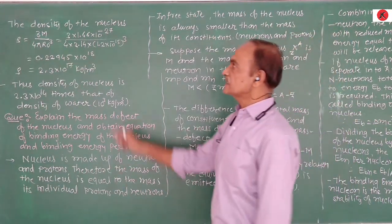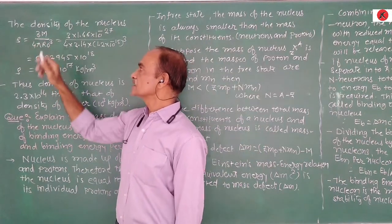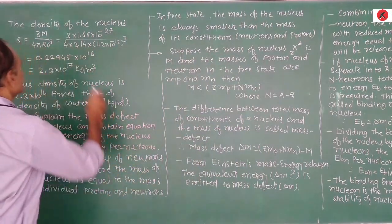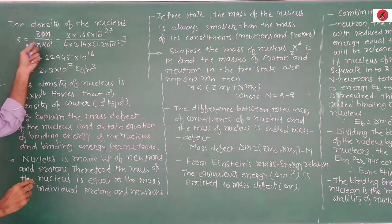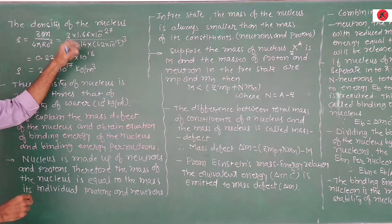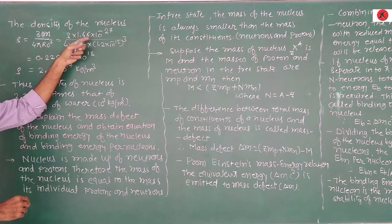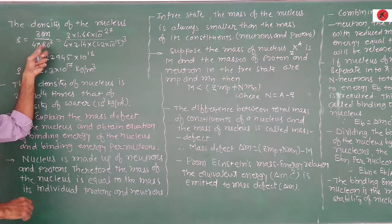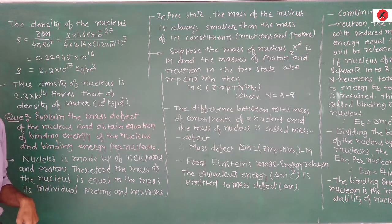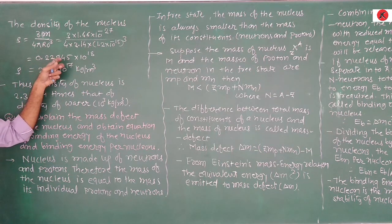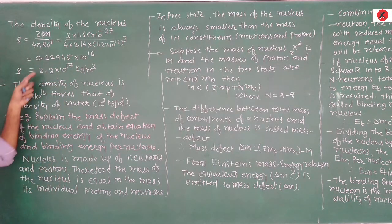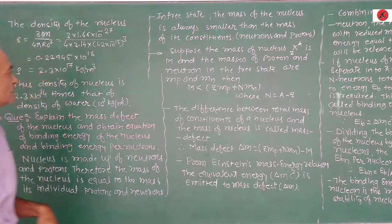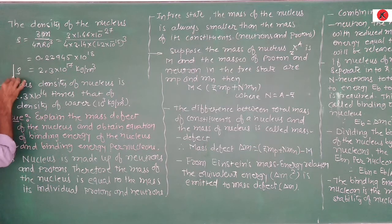Substituting values into ρ = 3m / (4π · R₀³): m = 1.66 × 10⁻²⁷ kg, R₀ = 1.2 × 10⁻¹⁵ m, and π = 3.14. We obtain approximately 0.22945 × 10¹⁸, therefore ρ ≈ 2.3 × 10¹⁷ kg/m³. This is the density of the nucleus of various elements.